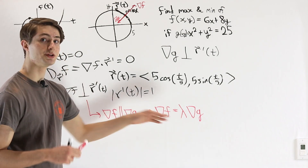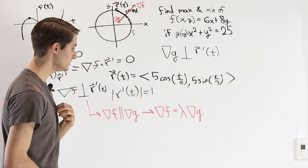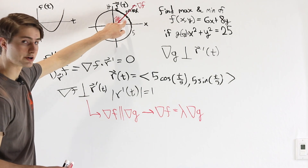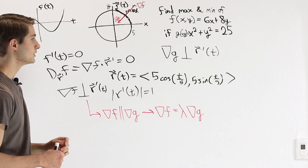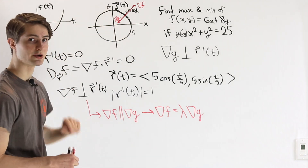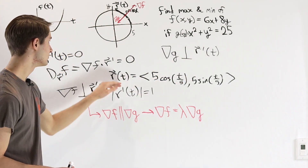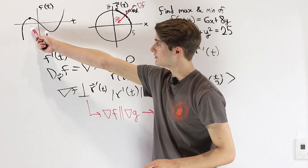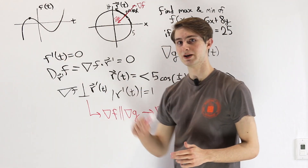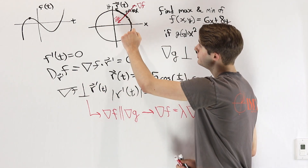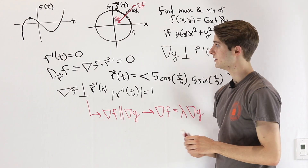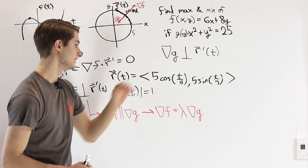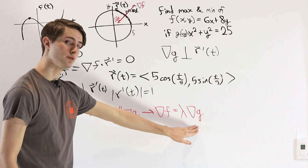Two vectors being parallel means one is a constant multiple of the other. This is the primary formula we use when calculating Lagrange multipliers: the gradient of f equals some constant lambda times the gradient of g. We can use this to solve for the values x and y on our curve that give the maximum and minimum values. We arrived here by observing that the gradient of g is orthogonal to the contour line, meaning orthogonal to r prime of t. Using a space curve in one variable let us apply single variable calculus to conclude f prime of t equals zero at a maximum or minimum, so the directional derivative of f along the curve equals zero, meaning the gradient of f is also orthogonal to r prime — just like the gradient of g — and therefore the two gradients are parallel, one being a constant multiple of the other.